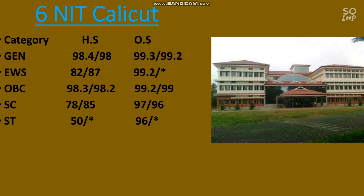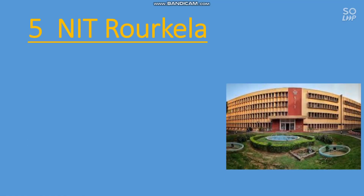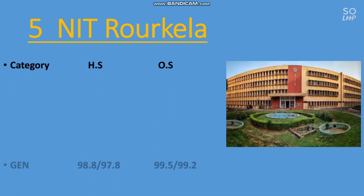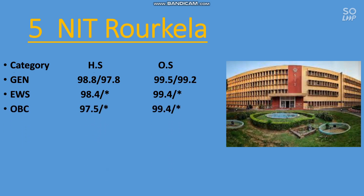The next one is number 5, NIT Rourkela. The cutoff for the EC branch is: General — 99.5 percentile, EWS — 99.4, OBC — 99.4, SC — 97.5, and ST — 96 percentile minimum required to get the EC branch.